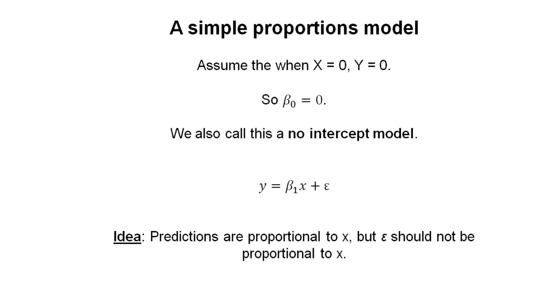Let's think about a simple proportion model. We can scale the x variable by some value to make predictions for y. We're multiplying some value x by a proportion, setting beta 0 equal to 0. We can also call this a no-intercept model or an intercept-free model. Our estimates of y have a slope times some value x plus some random error term, epsilon. The idea is that the predictions are proportional to x, but the random error does not need to be proportional to x.